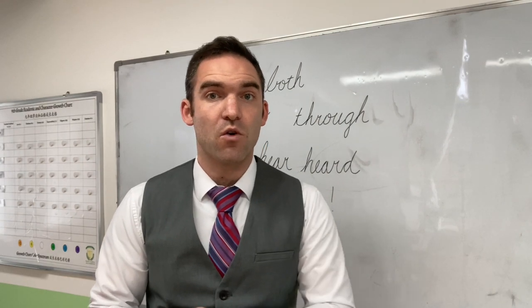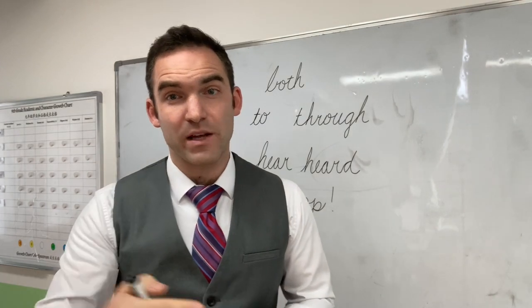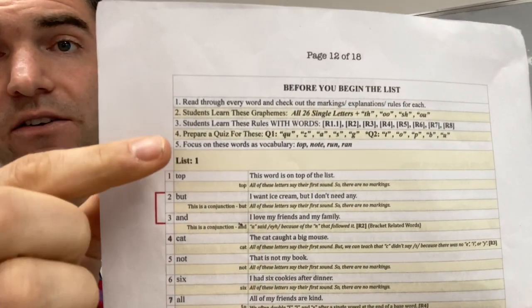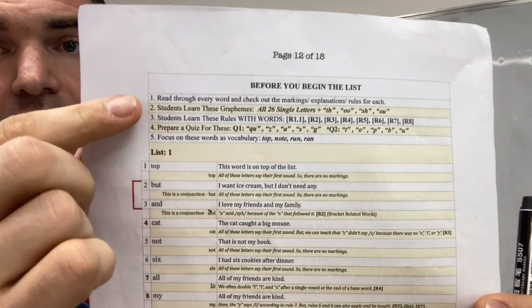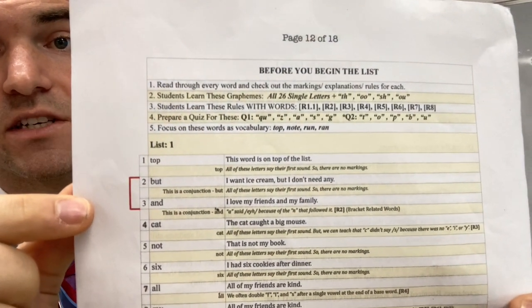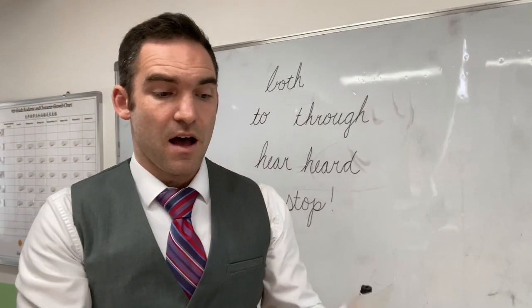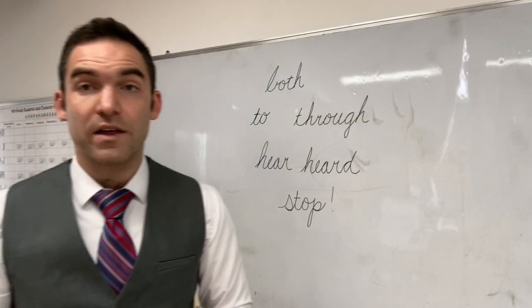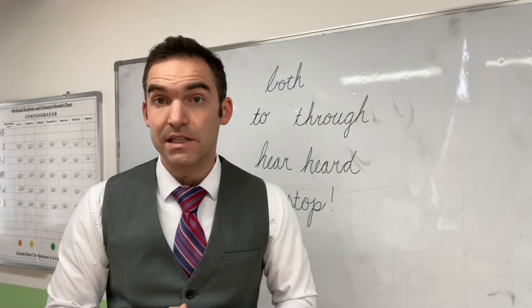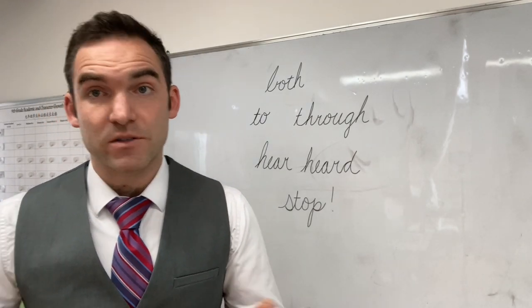The difference between single and multiletter graphemes is that we call them that in order to differentiate when we would teach them. We teach all of the single-letter graphemes before we would ever start the program with any student, and then we teach the multiletter graphemes in following lists. I have here an example of what a page from your spelling book would look like. You'll notice it says before you begin your list, number one: read through the list and make sure you understand the markings. Number two: teach these graphemes — all 26 single-letter graphemes, and then add graphemes 27, 28, 29, and 30, which are the multiletter graphemes for the first spelling list.